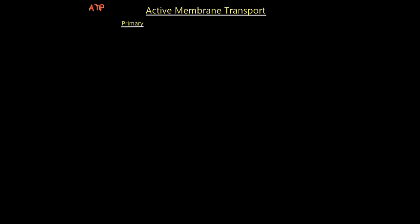Active membrane transport occurs in terms of primary and secondary forms. In primary active membrane transport, the same protein that transports molecules also hydrolyzes ATP at the same site — it does everything itself. In secondary active transport, the ATP hydrolysis is facilitated and the energy is provided through a different mechanism.